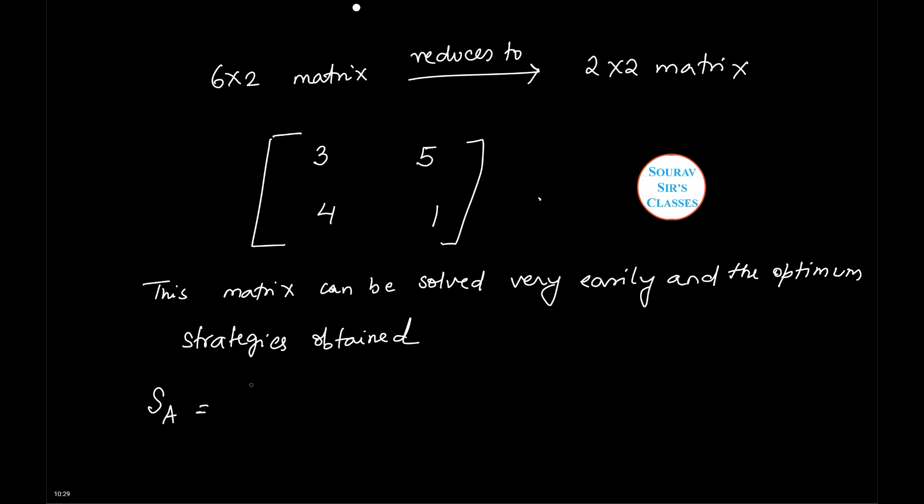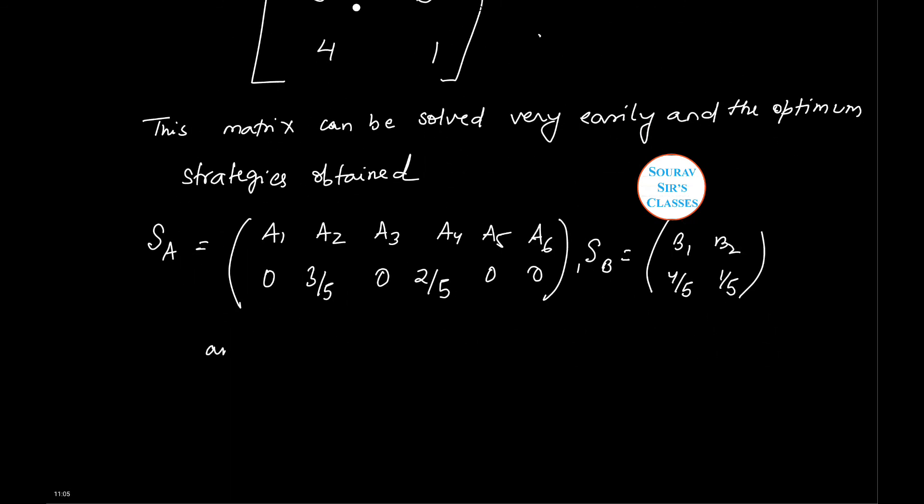Sa will be (A1, A2, A3, A4, A5, A6). We'll substitute zeros for A1, A3, A5, and A6, and this will be 3 by 5 and 2 by 5. Sb will be (B1, B2), which is 4 by 5 and 1 by 5. If you solve this, you will get the value of the game as 17 by 5.